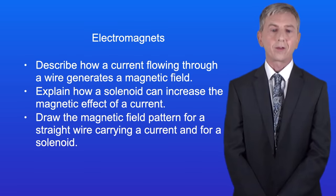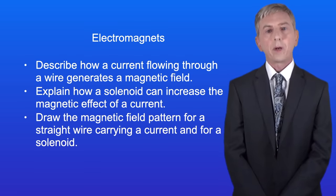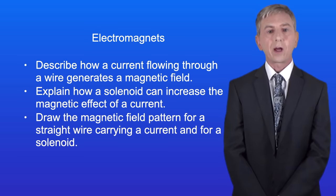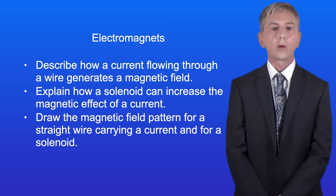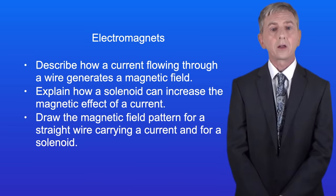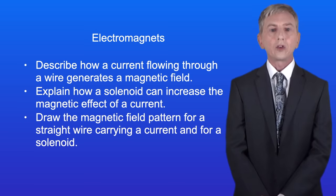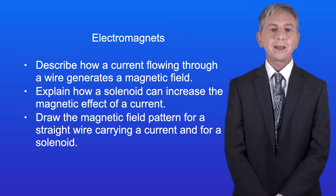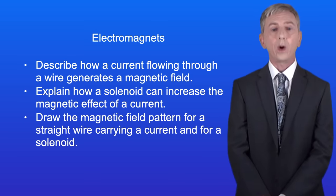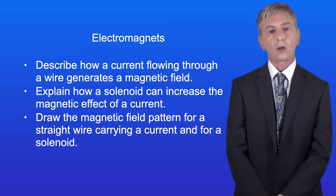Hi and welcome back to freesciencelessons.co.uk. By the end of this video you should be able to describe how a current flowing through a wire generates a magnetic field. You should then be able to explain how a solenoid can increase the magnetic effect of a current. And finally, you should be able to draw the magnetic field pattern for a straight wire carrying a current and for a solenoid.